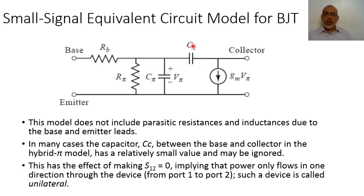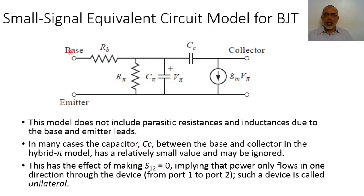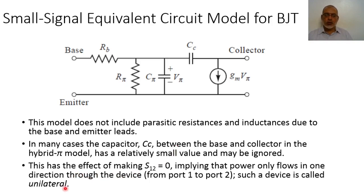If the capacitance between the base and the collector is ignored, the device is said to be unilateral — meaning the signal flows from port 1 to port 2 but not from port 2 to port 1. In S-parameter terms, S12 is nearly zero. This means current flows only from the base to the collector and not in reverse, and this configuration is defined as unilateral. Generally speaking, S12 is not purely zero, but if S12 is very small, the device is considered nearly unilateral.